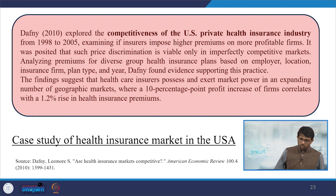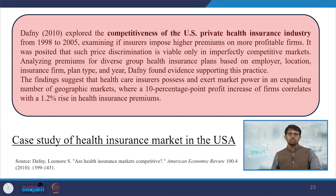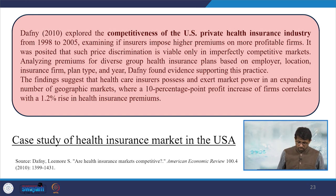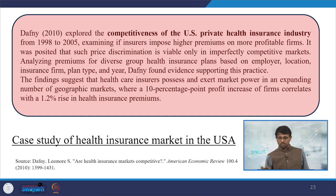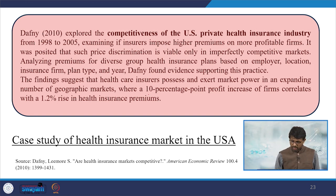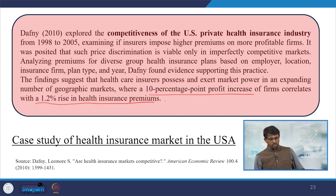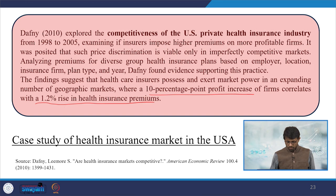Daphne (2010) explored the competitiveness of the US private health insurance industry from 1998 to 2005, examining if insurers imposed higher premiums on more profitable firms. Price discrimination is viable only in imperfectly competitive markets. Analyzing premiums for diverse group health insurance plans, Daphne found evidence supporting this practice — a 10 percentage point profit increase of firms correlated with a 1.2 percent rise in health insurance premiums. The citation is from the American Economic Review.